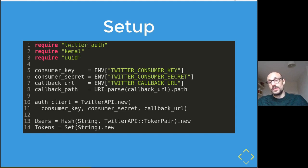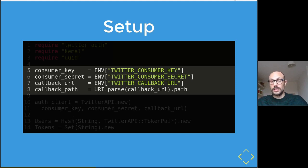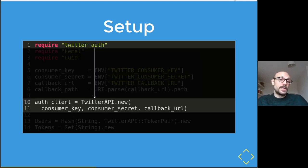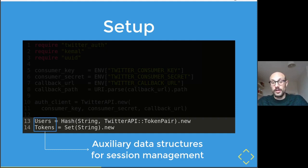Let's look at the code. In the setup of our web application we extract a bunch of parameters from environment variables: the consumer key, consumer key secret, and callback URL. I'm extracting the callback path from the callback URL to make the endpoint definition generic across dev, local, and production environments. The fundamental step is to initialize an auth client via the Twitter API constructor, passing the consumer key, consumer secret, and callback URL. There are also a couple of auxiliary data structures we need to define for session management.